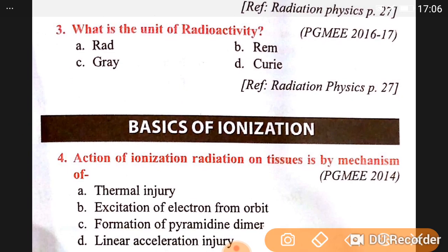Third, the unit of radioactivity is the curie. The action of ionizing radiation on tissue is by the mechanism of excitation of an electron from its orbit.